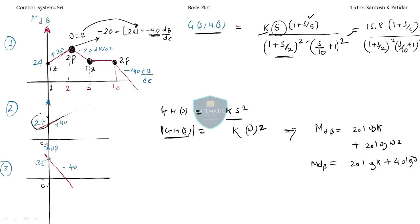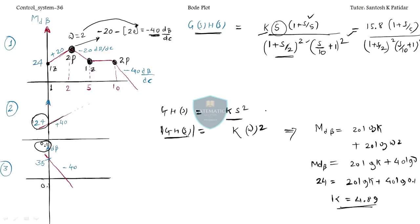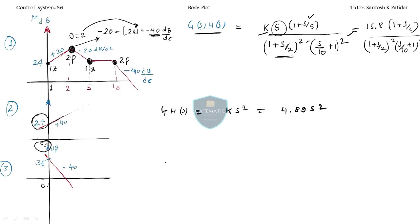The magnitude is 24 dB at ω = 0.1. Substituting: 24 = 20 log k + 40 log(0.1). Solving gives k = 4.89. So the transfer function for question two is 4.89·s². That question is done.